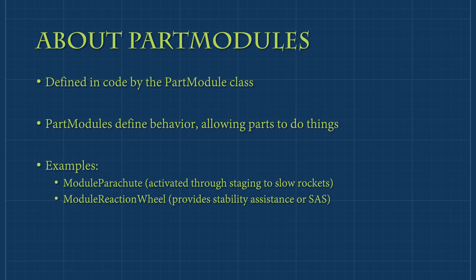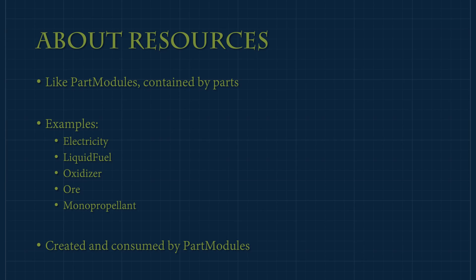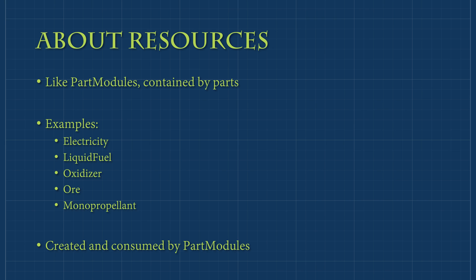On the note of electricity, there's one more thing about parts I haven't yet covered: resources. In addition to modules, parts can also contain resources such as electricity, liquid fuel, oxidizer, ore, and monopropellant. Resources are there for part modules to either create or consume, depending on the purpose of the part. For example, solar panels create electricity, while antennas consume it to transmit science experiments.